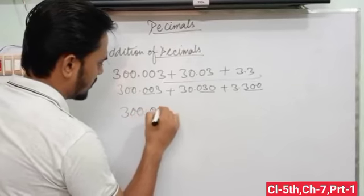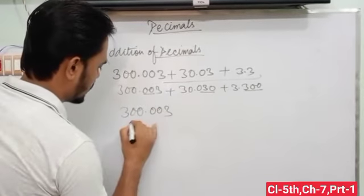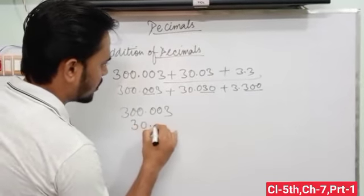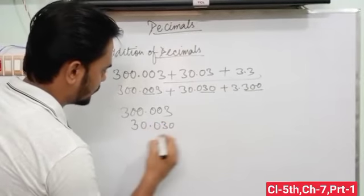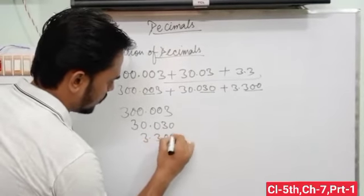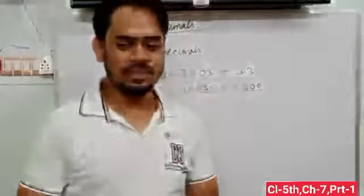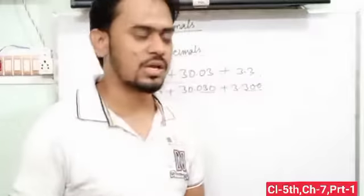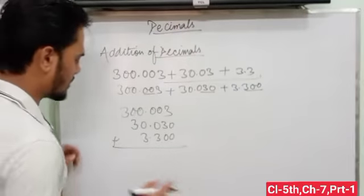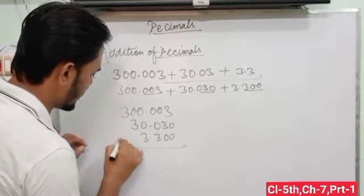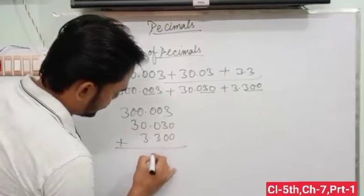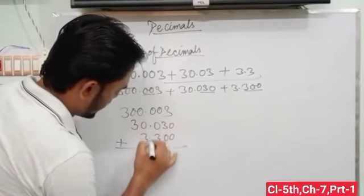So 300.003 plus 30.030 plus 3.300. Now step third: add as we add whole numbers. If whole number, go ahead and add the number. Then put the decimal in front of here.